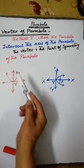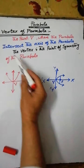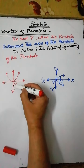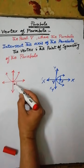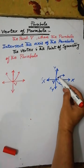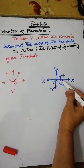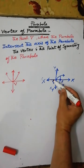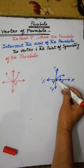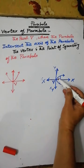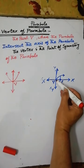The vertex of the parabola is the point where the parabola intersects the axis of the parabola. The axis of the parabola is a straight line passing through the focus and the vertex. This point of intersection is called the vertex of the parabola.